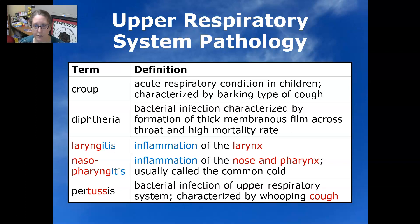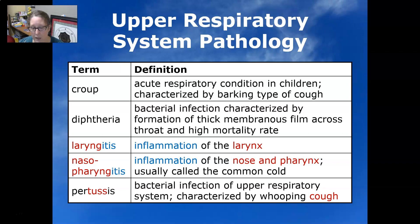Diphtheria is a bacterial infection characterized by the formation of a thick membrane across the throat and a high mortality rate. Diphtheria, pertussis, and even croup are covered by vaccination. Laryngitis is an inflammation of the larynx. Nasopharyngitis is an inflammation of the nose and pharynx.